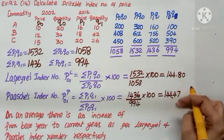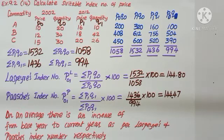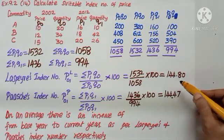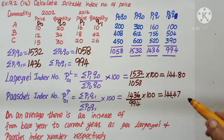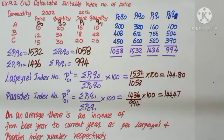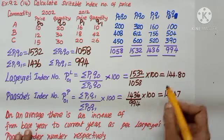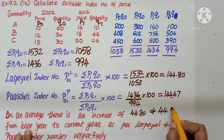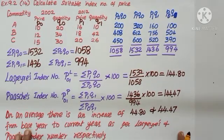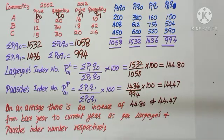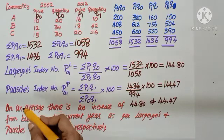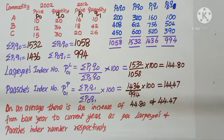As I see the two values, what do I understand from this? If a particular thing is 100 rupees in base year, now it has become 144.80. So what is the increase? 144.80 minus 100. So on an average, there is an increase of 44.80 and Paasche's tells me 44.47 from base year to current year as per Laspeyre's and Paasche's index number respectively. And that is the inference we make using index numbers.